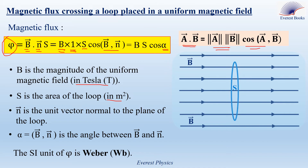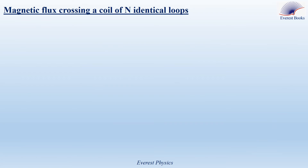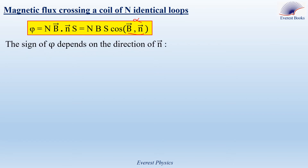The SI unit of magnetic flux phi is the Weber. For a coil of N identical loops, the total flux equals the flux crossing one loop multiplied by the number of loops. Therefore, the magnetic flux is given by N times B times S times cosine alpha, where alpha is the angle between B and N. From this expression, the flux could be positive, negative, or zero, because it depends on the direction of the unit vector N.